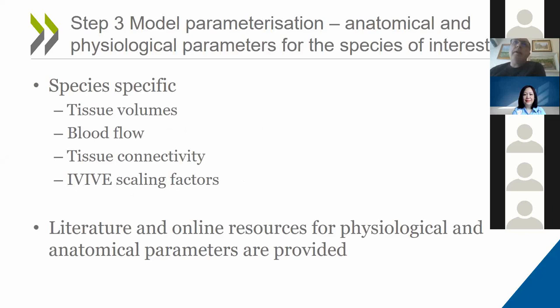For model parameterization, there are two aspects. The first is the anatomical and physiological parameters, which vary from species to species. We need information about tissue volumes and blood flow, how tissues connect together, and if using in vitro to in vivo extrapolation approaches, the different scaling factors needed to convert in vitro data into in vivo clearance for use in the PBK model. In the guidance, we've listed a number of literature and online resources for physiological and anatomical data that would be useful for PBK modelers.